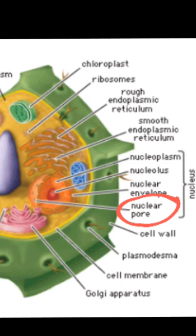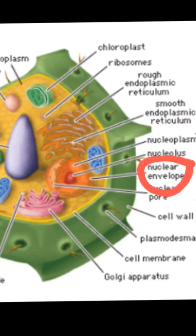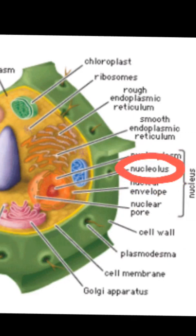Singing along helps you to become more involved with this. Nuclear envelope is a double membrane purposed to protect and store genetic information in the nucleus. Nucleus is an organelle membrane-bound to contain DNA for operations. Like, share, and subscribe if you are learning.